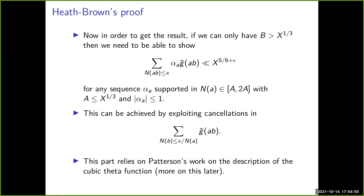Since the target bound is x^{5/6}, this forces B > x^{1/3} in the bilinear sum. Consequently, in the linear sum you need to handle a up to at most x^{1/3}. The linear sum is easier because the coefficient on b is smooth, so you can hope to bound the sum by summing over b. Heath-Brown handles this by summing over b and using Patterson's work to show cancellations, since cubic Gauss sums are coefficients of a metaplectic form.